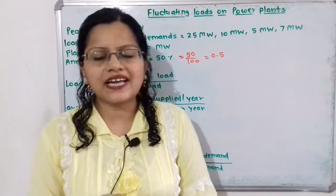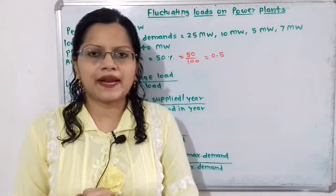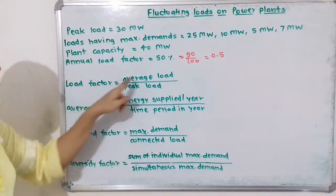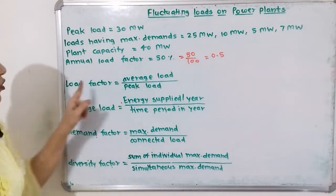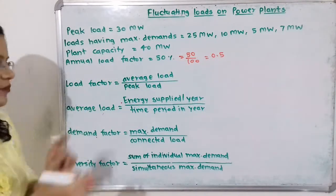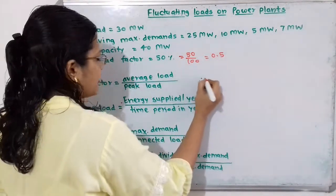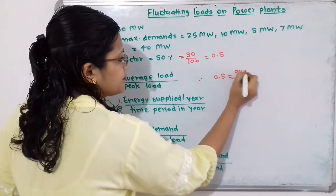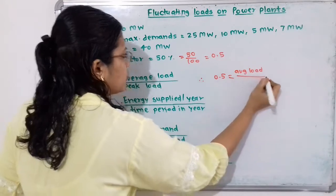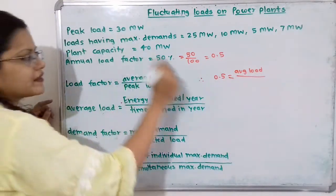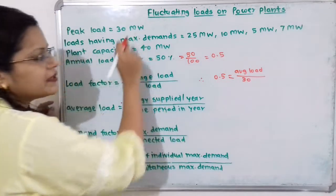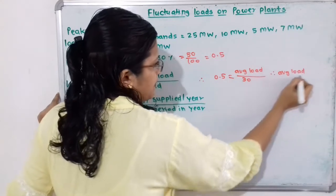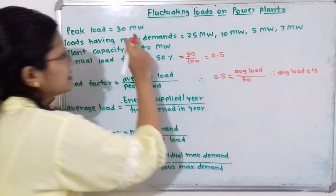Now we will move to the first calculation: average load. Load factor is given, and load factor equals average load divided by peak load. Therefore, 0.5 equals average load divided by peak load. Peak load is 30 MW, so average load equals 30 multiplied by 0.5, which is 15 MW.